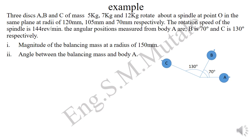In the example, three discs A, B, and C have masses 5 kg, 7 kg, and 12 kg, rotating on a spindle in the same plane at radii of 120 mm, 105 mm, and 70 mm respectively. The angular positions measured from disc A are: A is the reference, B is 70 degrees from A, and C is 30 degrees from A.